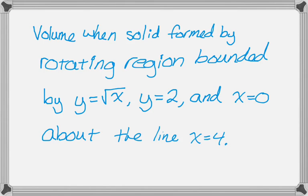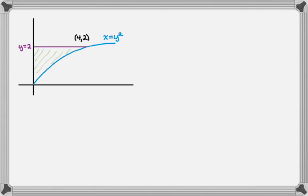This time we're going to go around x equals 4 — basically the same problem, but around x equals 4. We create our graph, and I've already solved x equals y squared.